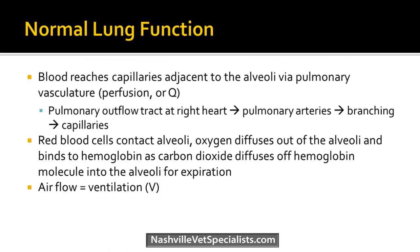The blood gets to the capillaries near the alveolus via the pulmonary vasculature — that's the Q, or perfusion, when we talk about VQ mismatch. The blood leaves the right side of the heart, goes to the pulmonary arteries, branching occurs, and then it reaches the capillaries. The red blood cells go by the alveoli, oxygen leaves and binds to hemoglobin, and carbon dioxide leaves hemoglobin and goes into the alveoli — they basically just swap places.